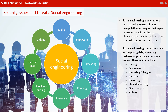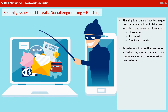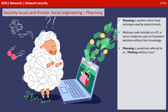One of the most popular is phishing — spelled with a PH. It's an online fraud technique used by cyber criminals to trick users into giving out personal information such as usernames, passwords, and credit card details. Perpetrators disguise themselves as a trustworthy source in electronic communication such as an email or fake website. Another is pharming — another online fraud technique where malicious code is installed on a PC or server which misdirects users to fraudulent websites without their knowledge. Pharming is therefore sometimes referred to as phishing without a lure.